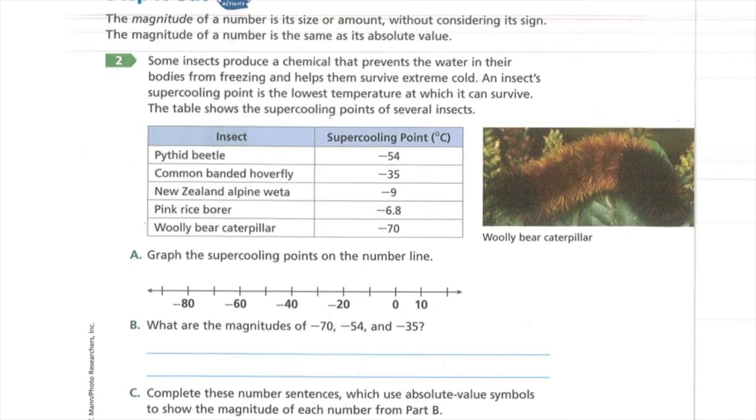The magnitude of a number is its size or amount without considering its sign. The magnitude of a number is the same as the absolute value. That's important. Magnitude is the same as the absolute value. Keep that in mind.